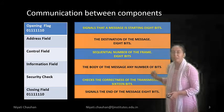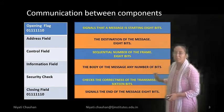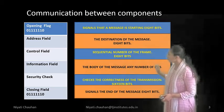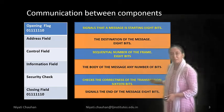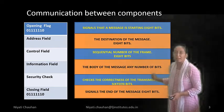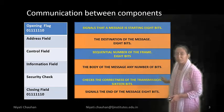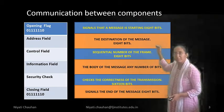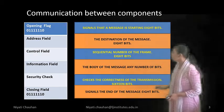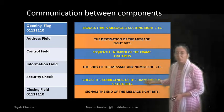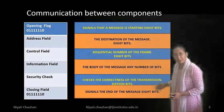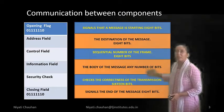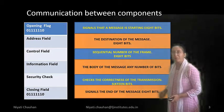Then the information field — the body of the message — any number of 8-bit. In the next layer, that is the information field. Then after the security check: in the security check, the connection of the transmission is 16-bit, so here we are converting the 8-bit message to 16-bit. Then after the closing field, in the closing field, we again convert our message back to 8-bit.